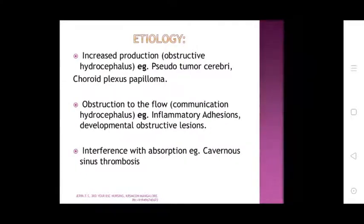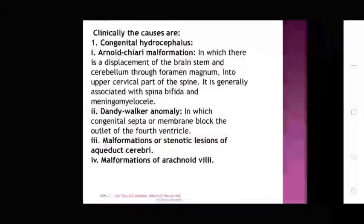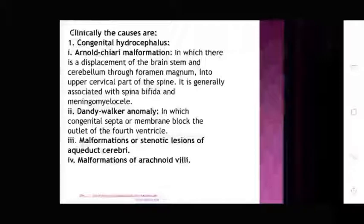Etiology: increased production — obstructive hydrocephalus, for example pseudotumor cerebri and choroid plexus papilloma. Obstruction to flow — communicating hydrocephalus, examples include inflammatory adhesions and developmental obstruction lesions. Interference with absorption, for example cavernous sinus thrombosis.